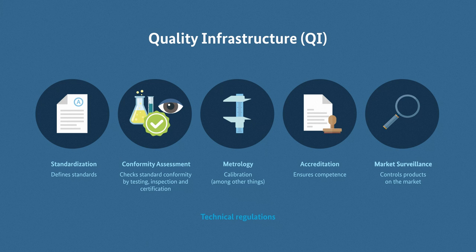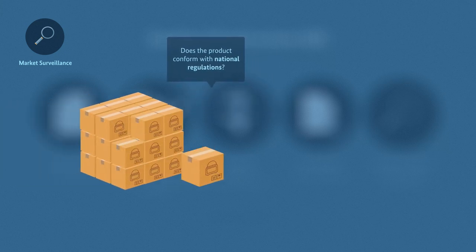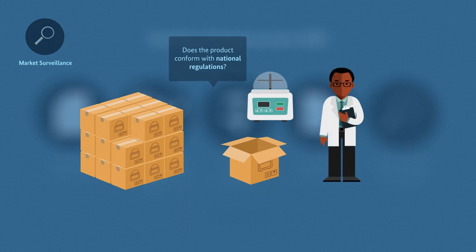Finally, there's market surveillance as the last remaining element of QI. The task of market surveillance is to investigate whether products on the market conform to the national laws and regulations. For that, inspectors take samples of the product, whether from the producer or a reseller, and check whether conformity is met. If in doubt, they submit the product to a testing lab to test the product in more detail.